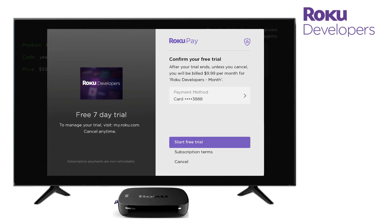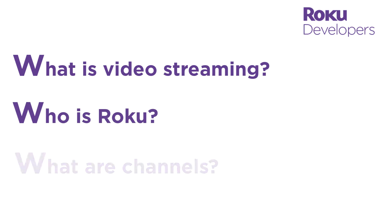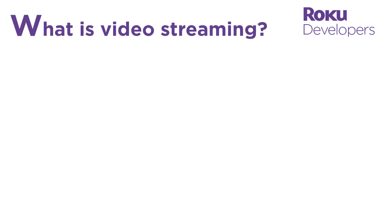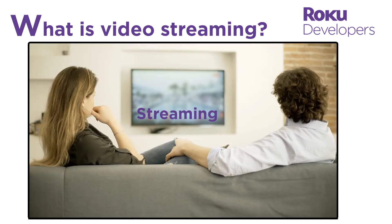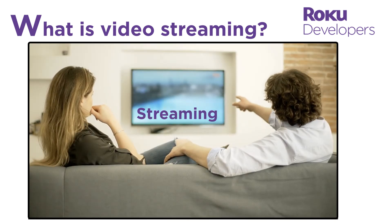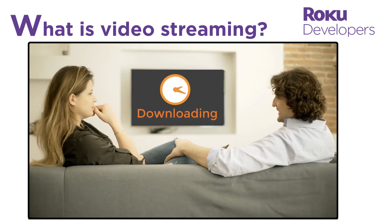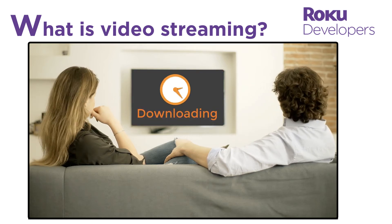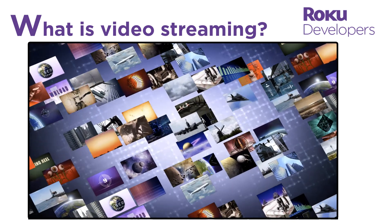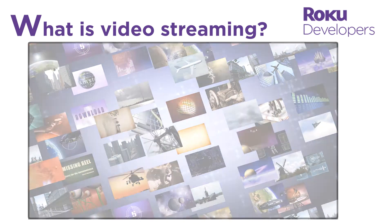Like what is video streaming, who is Roku, and what are channels? Video streaming is a way for users to watch TV shows and movies while they're being delivered over the internet. This is faster and easier than waiting for the content to be downloaded. More importantly, streaming is revolutionizing how viewers watch video content.